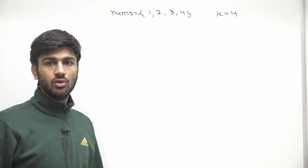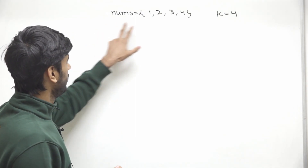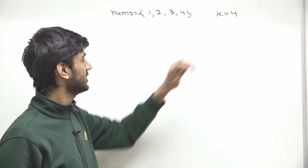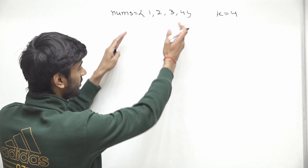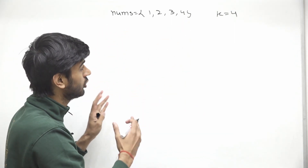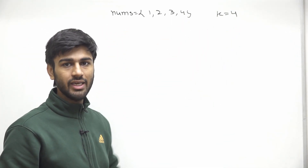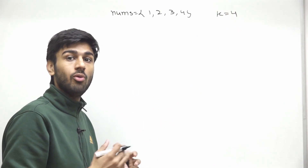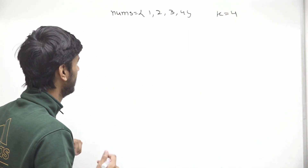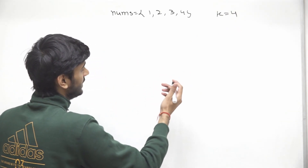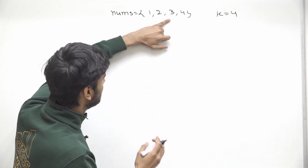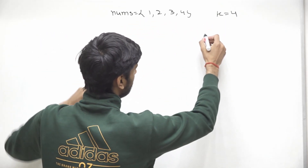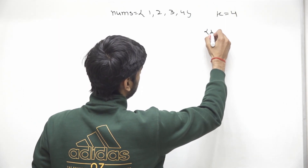Let's take an example to understand the problem statement. We are given this particular array and the value of k is 4. We have to divide these four elements into two groups such that both groups have a sum greater than or equal to k. So if we want a sum of four, we can pick these three elements in one group and this element in the second group.